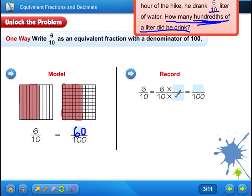So, ten times what equals 100? Ten times ten equals 100. Whatever you do to the bottom, you have to do to the top. So if I multiply the bottom by ten, I'm going to have to multiply the top by ten. So six times ten equals sixty.